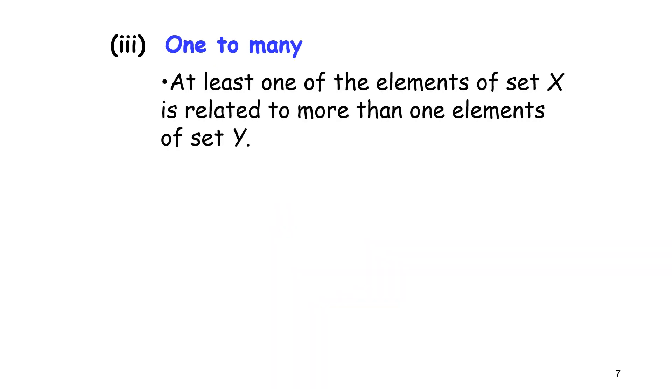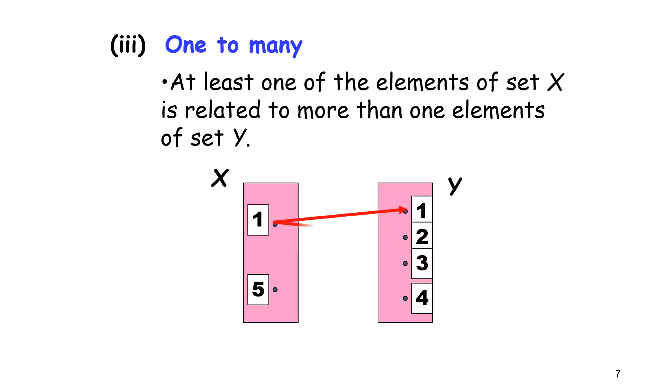One-to-many. At least one of the elements of set X is related to more than one element of set Y. In element X, we have 1 and 5. Element Y has 1, 2, 3, 4. From the arrow, element X which is 1 maps to 1, 2, and 3 in element Y, and 5 maps to 4 in element Y.